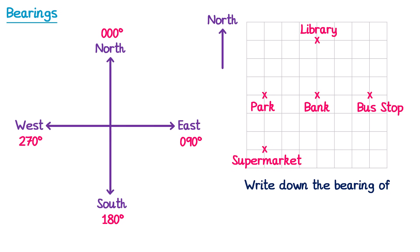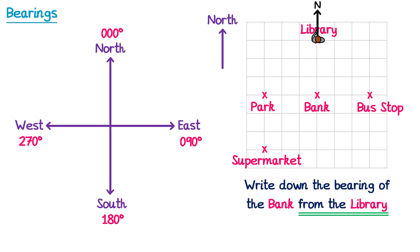Let's try another example. This time we're going to find the bearing of the bank from the library. Since it says from the library, we're going to place the person at the library. They're going to start by facing north, and turn clockwise until they're facing the bank. So if we turn clockwise until we face the bank, we've turned through one half of a turn, or 180 degrees. So the answer to this question is 180 degrees.